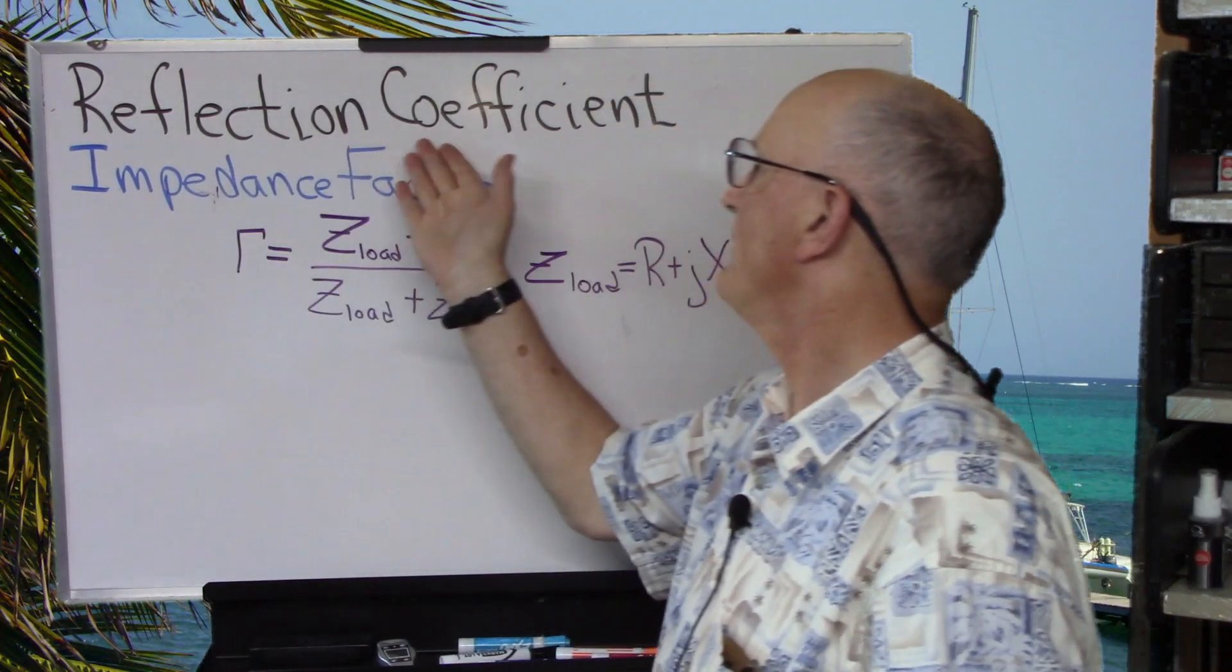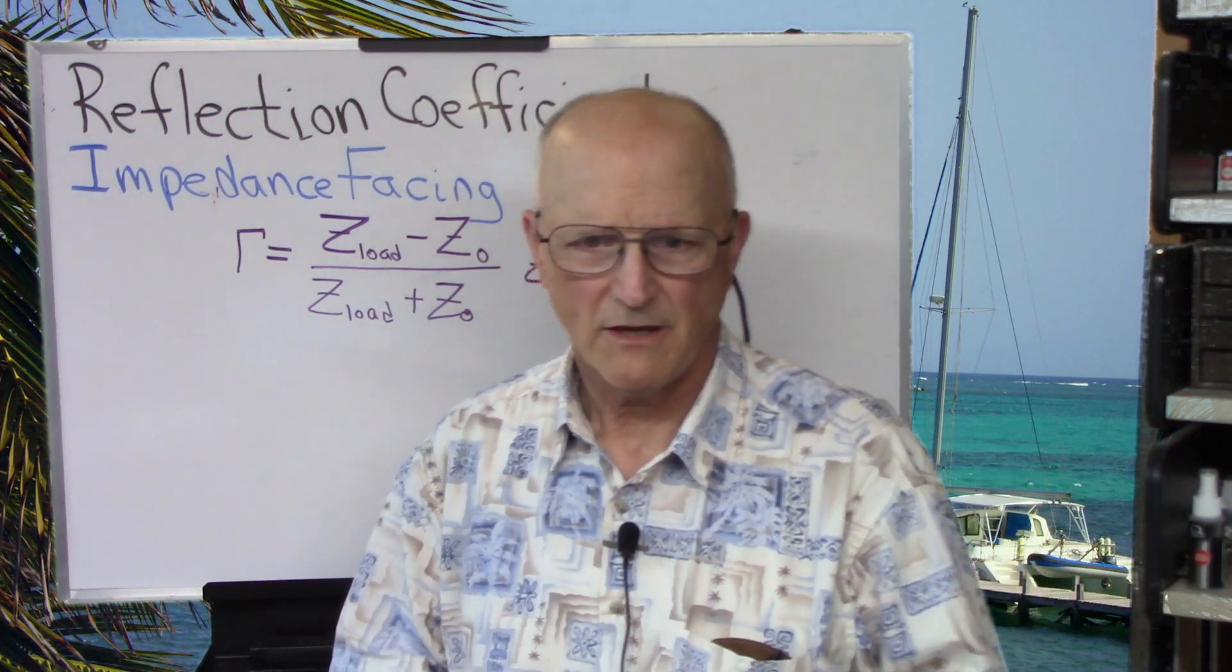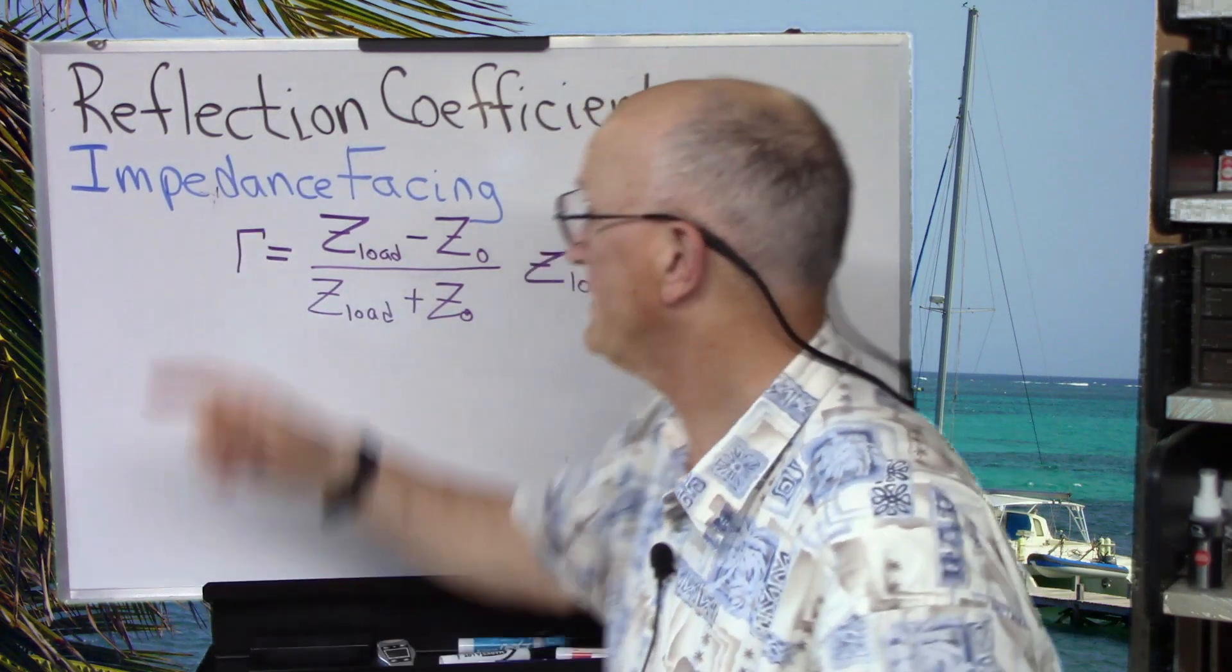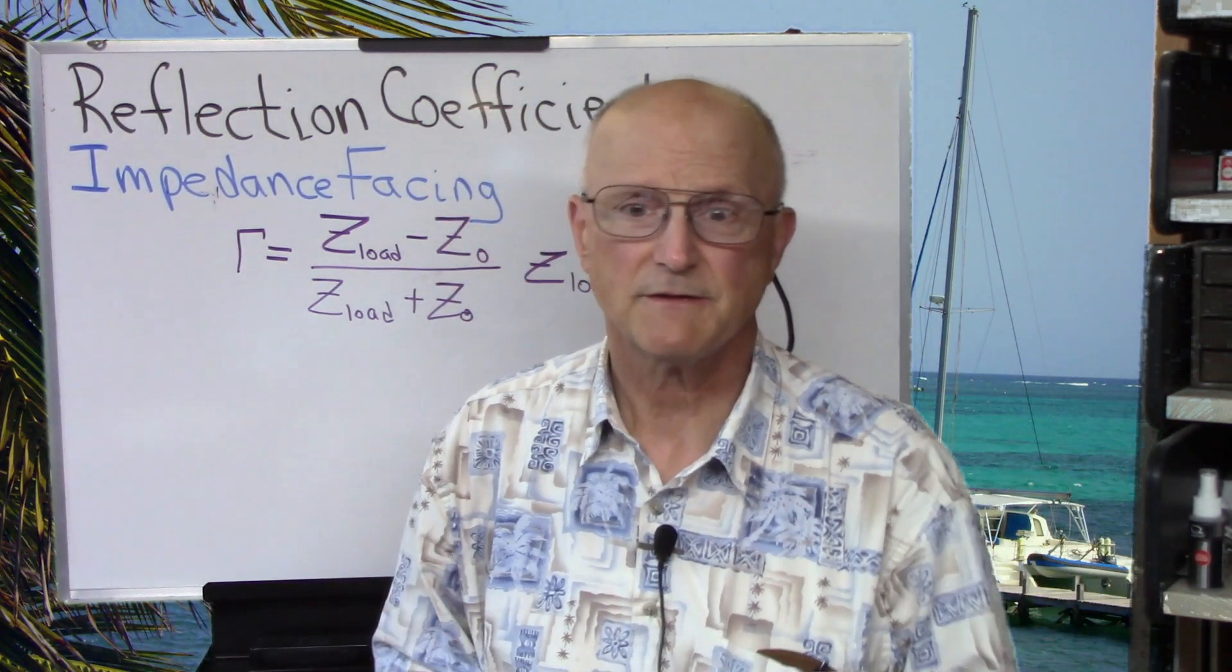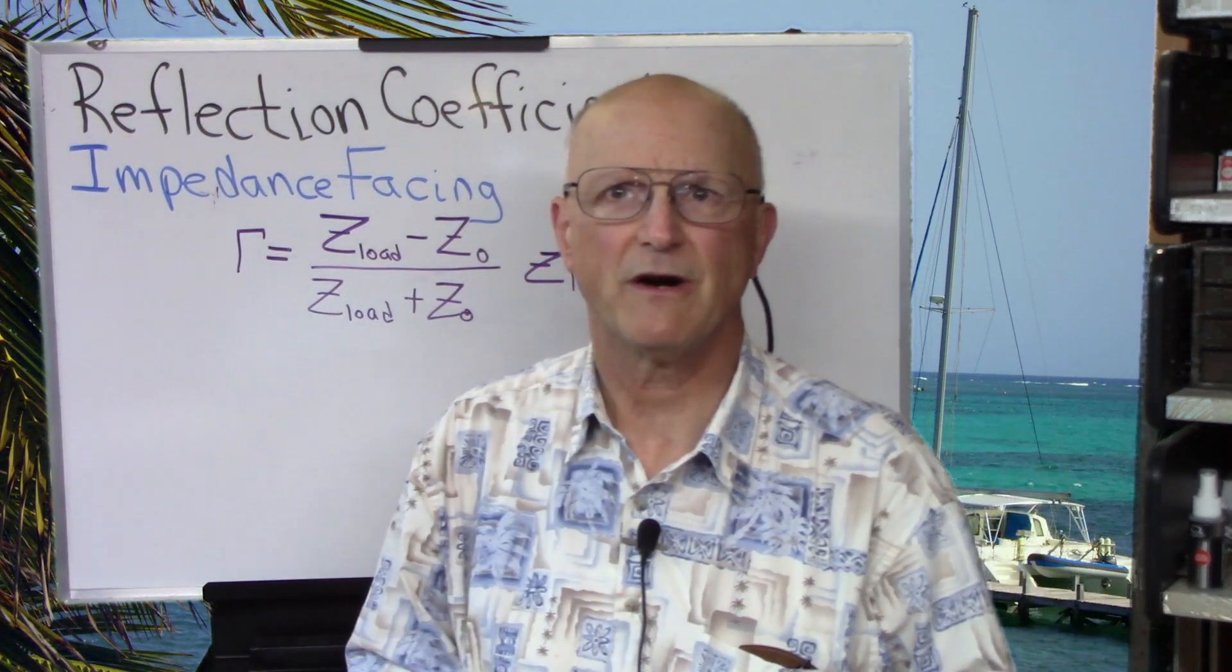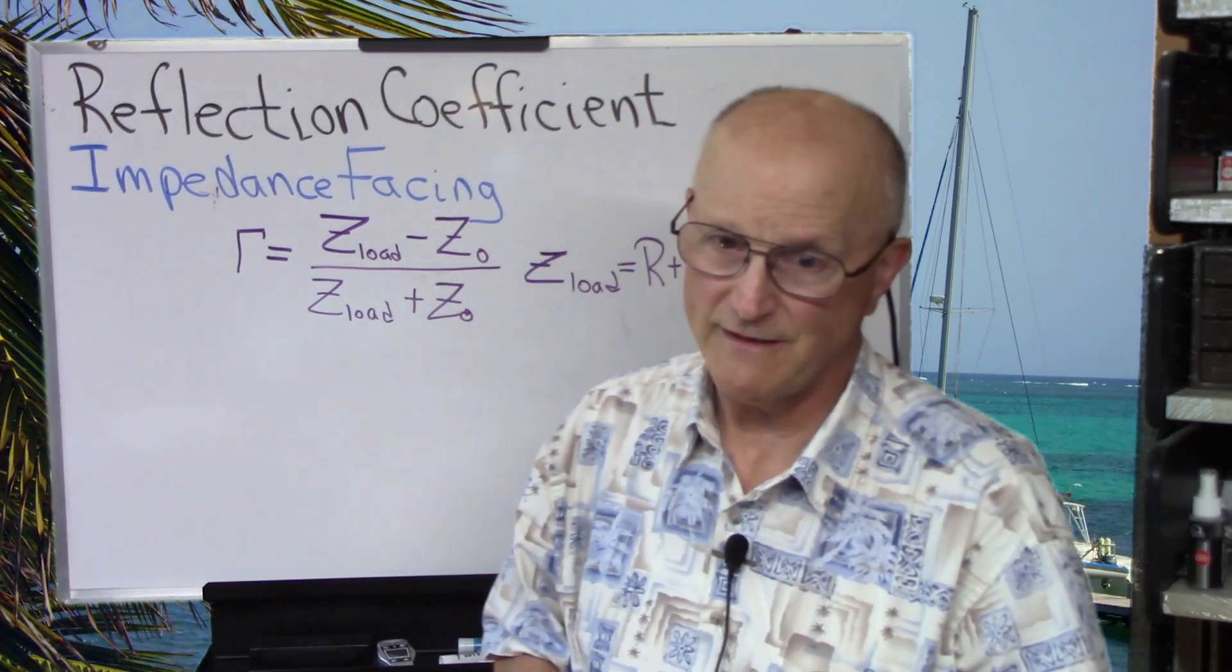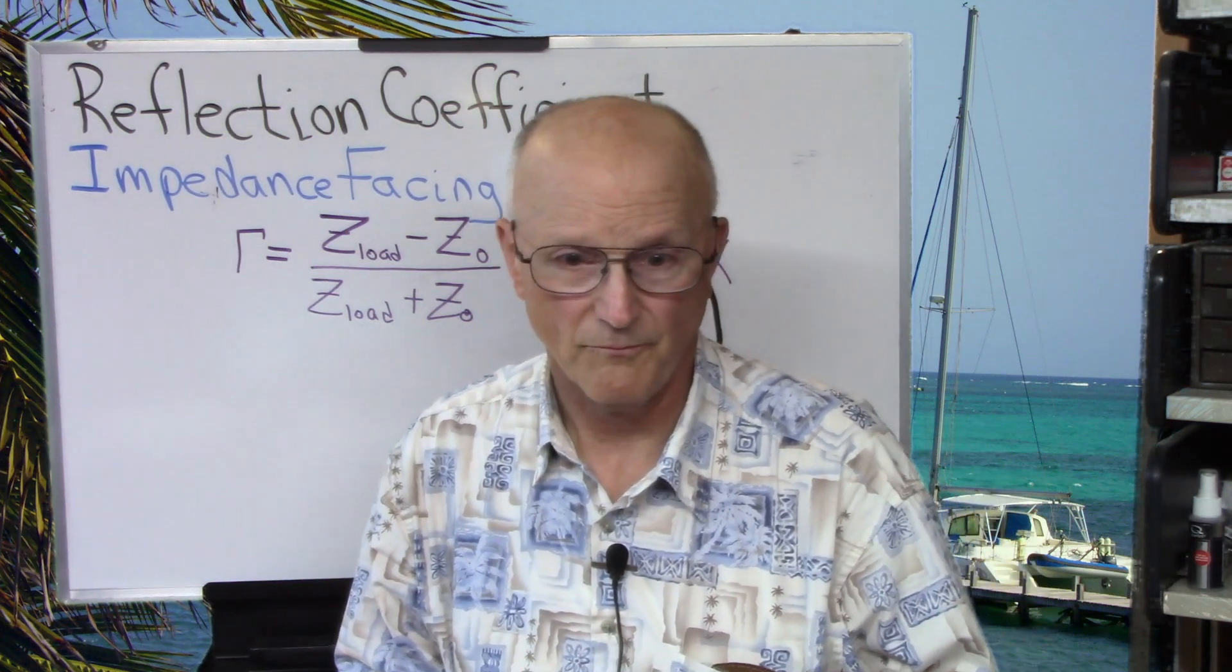To begin with, we will talk about reflection coefficient. Now, reflection coefficient is a part of a trio of mathematically related entities. There's reflection coefficient, which is the impedance-facing entity. There is return loss, which is the power-facing entity. And then there is VSWR, also known by most people as just plain SWR, which is the voltage-facing entity. Knowing any one of these, you can calculate the other two.